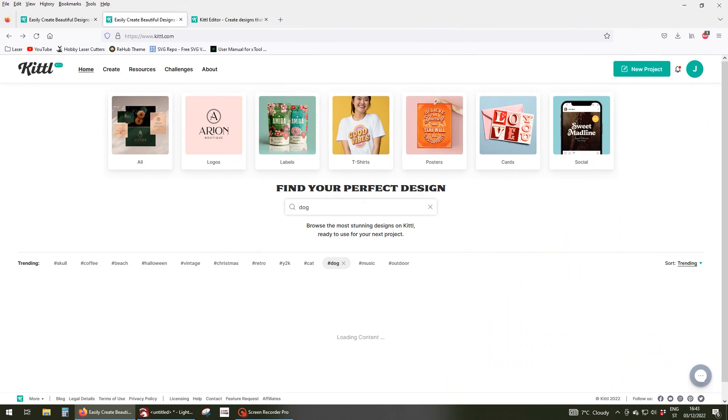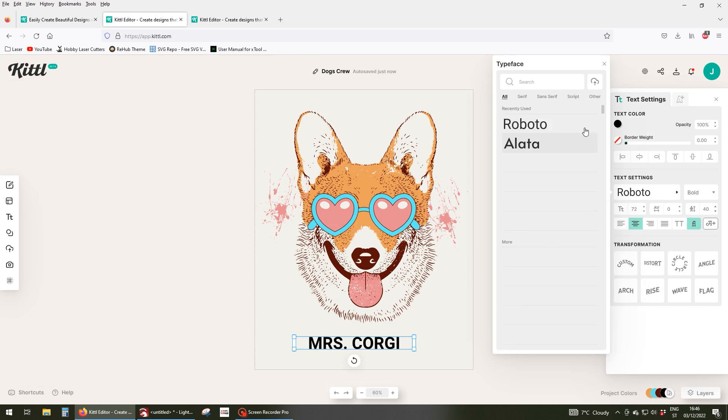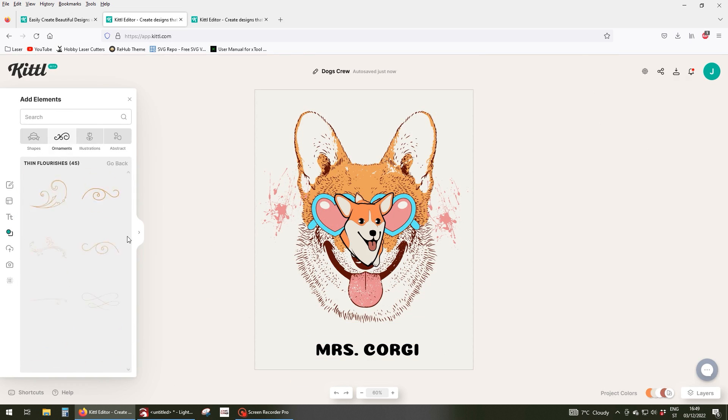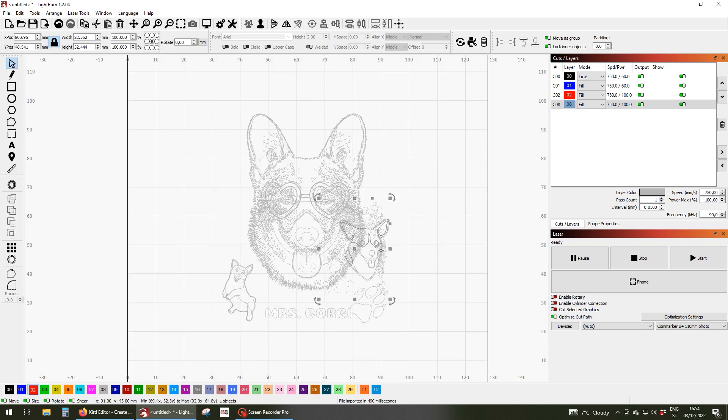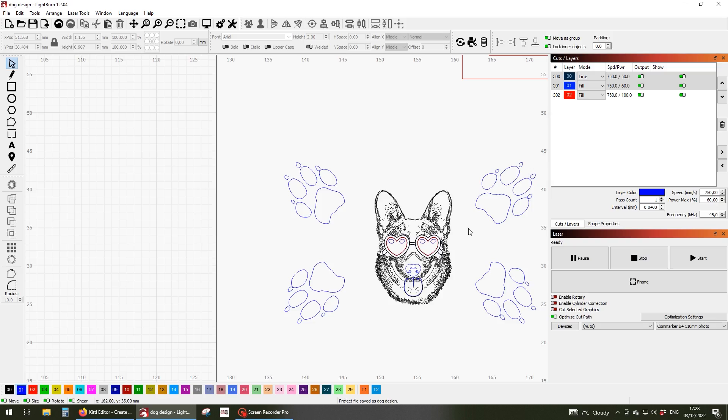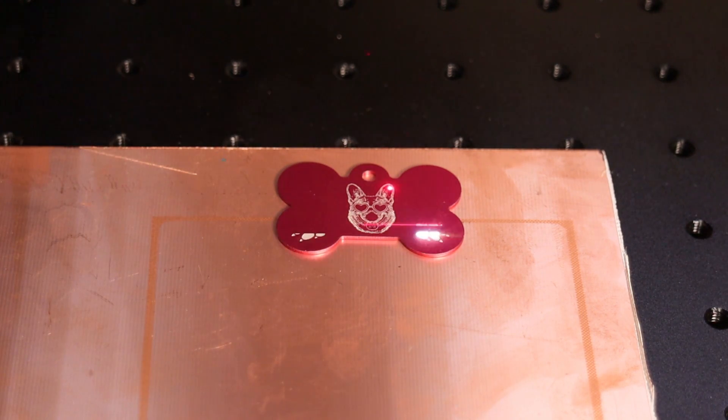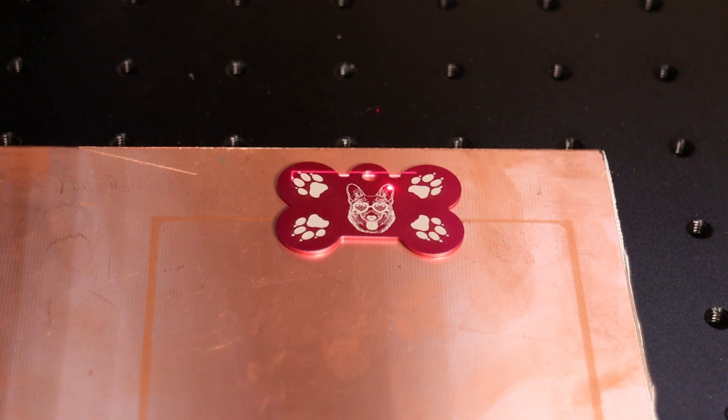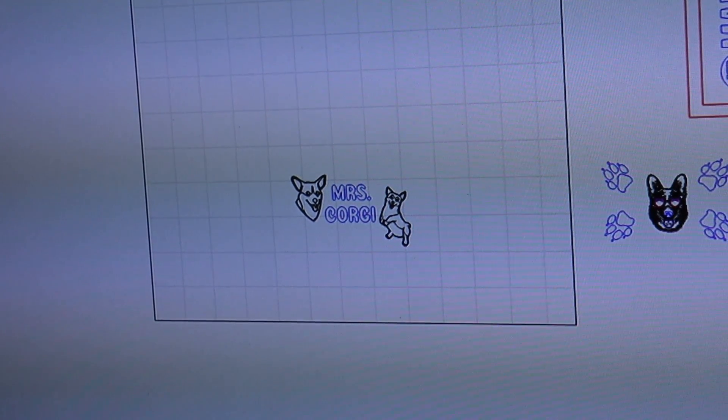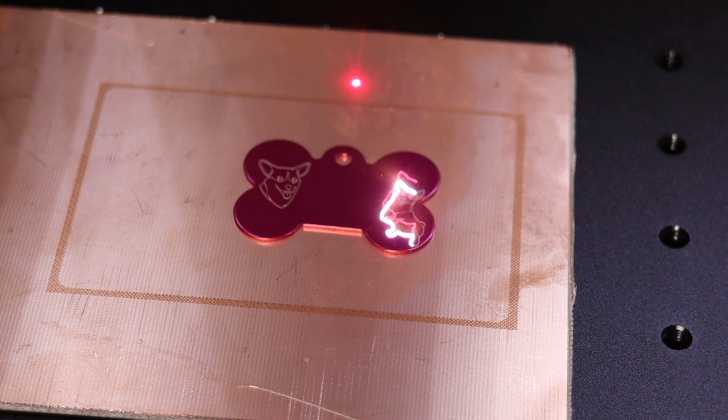This laser is also great for engraving on anodized aluminum. Once again, I got some vector shapes from Kittle to make a quick design to be engraved on a custom dog tag. This laser can also trace the individual vector shapes with a red light so you can precisely position the engraving on the workpiece.